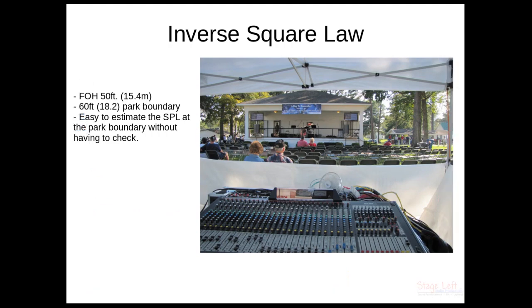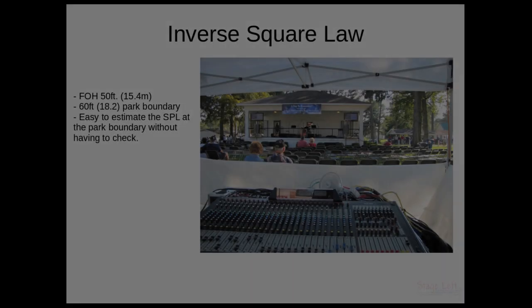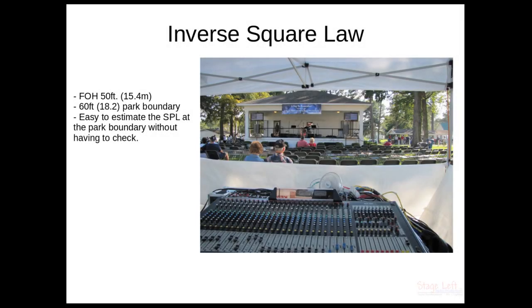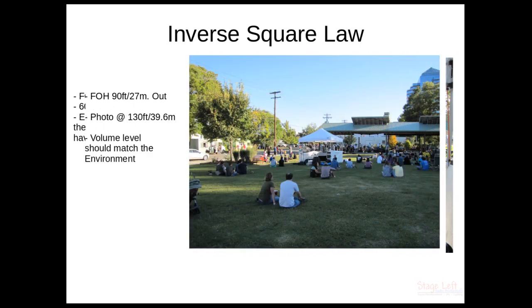Here's an example, outdoor show. Front of the house is 50 feet away, and the park boundary is an additional 60 feet back behind where this picture was taken. So we can use the inverse square law to estimate what our SPLs are going to be back behind us. Here's another event. Front of house was about 90 feet out. The photo was taken at 130 feet. And I do recall that the SPLs in this event were rather low back where we were, which is fine.